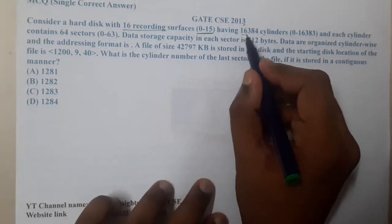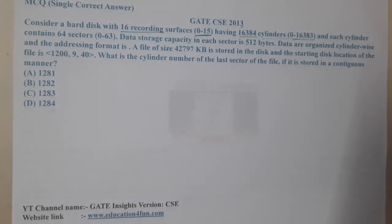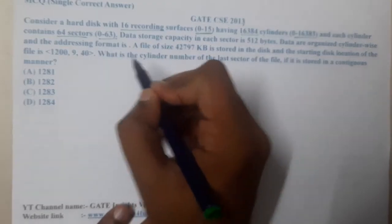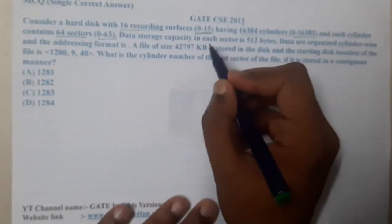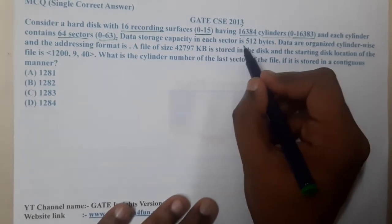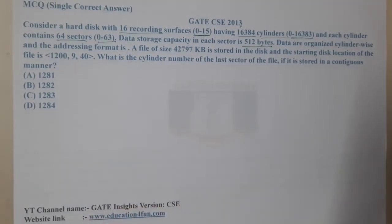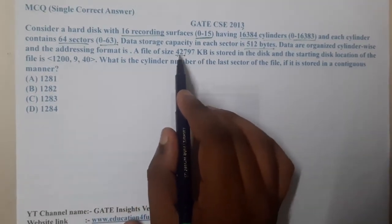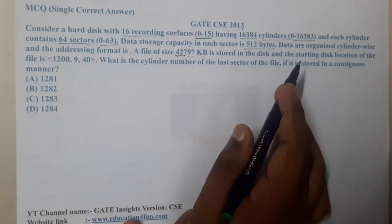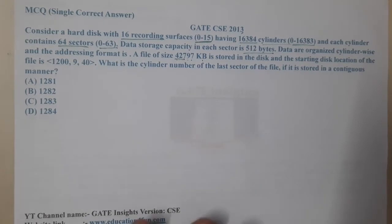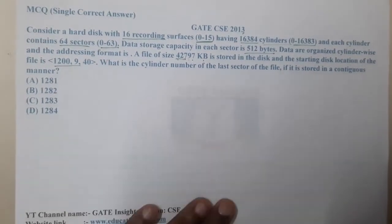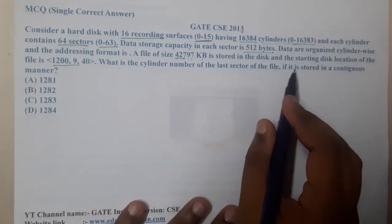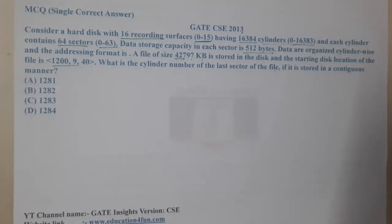The disk has 16,384 cylinders (0 to 16,383), and each cylinder contains 64 sectors (0 to 63). The data capacity in each sector is 512 bytes, and data is organized cylinder-wise. A file of size 42,797 KB is stored on the disk starting at location 120, and we need to find the cylinder number of the last sector of the file if storage is contiguous.